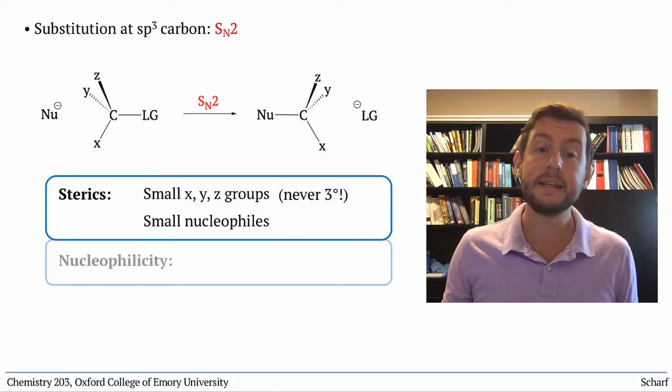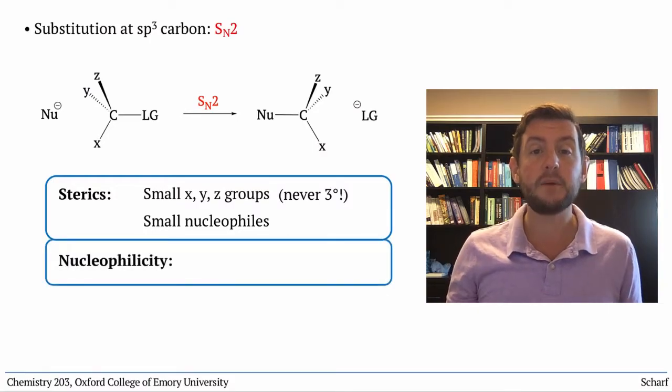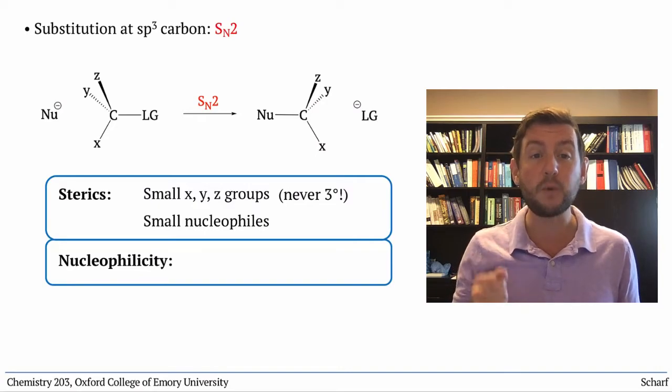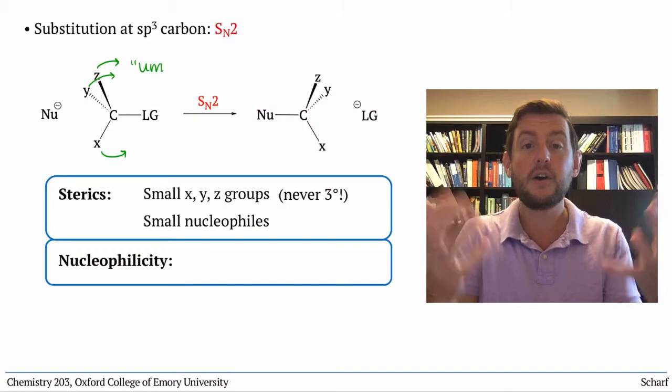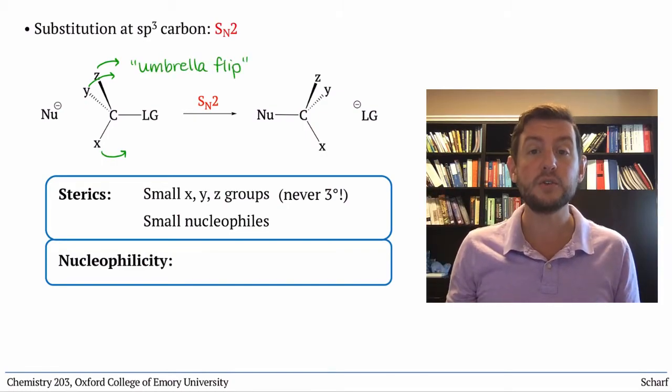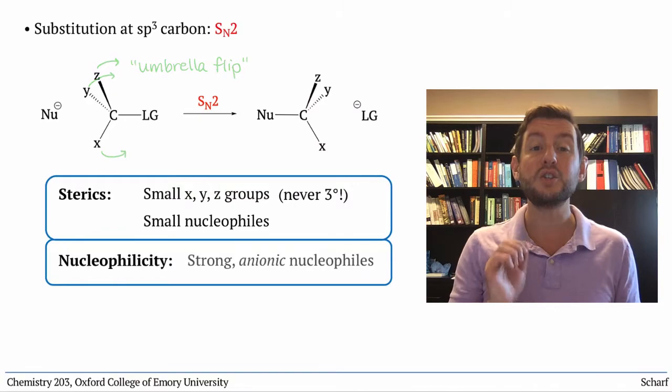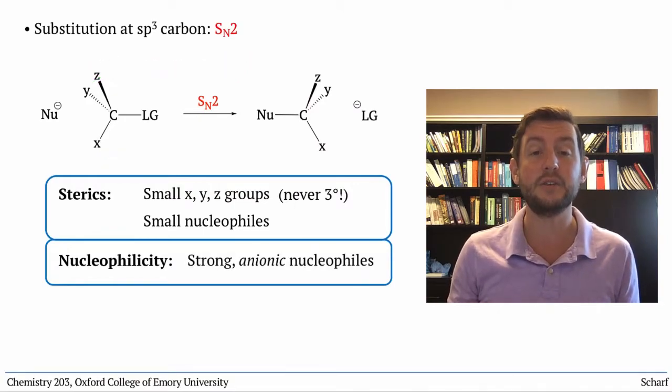Second, nucleophilicity. The nucleophile must be high energy enough to force the leaving group out and umbrella flip all the substituents. So usually the SN2 reaction occurs with strong anionic nucleophiles.